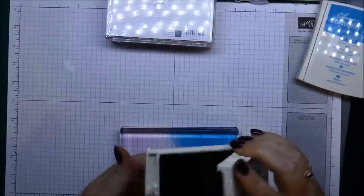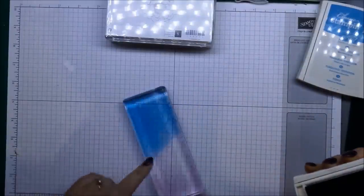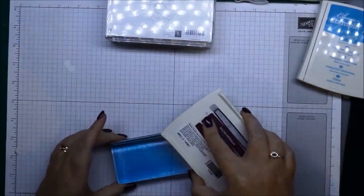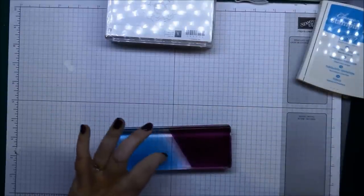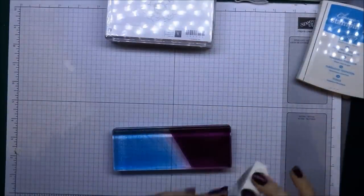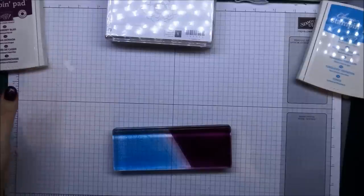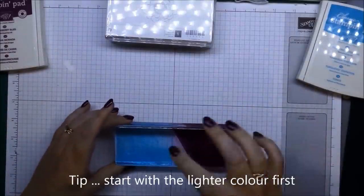And then I'm going to add some Blackberry Bliss to the other side. So just flip it around and do the same thing. Just get it close to each other. You don't want to mix your colors, so don't actually stamp over the top of the other one.